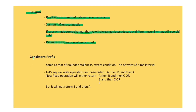Consistent prefix is the same as bounded staleness except it removes the condition of a certain number of writes or a certain time interval. That condition does not exist in consistent prefix — the out-of-order write protection still applies, as already discussed.